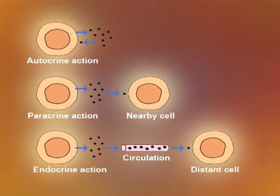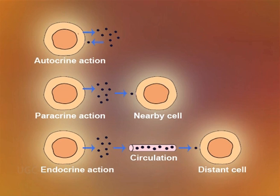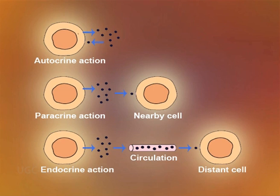A particular cytokine may bind to receptors on the membrane of the same cell that secreted it, exerting autocrine action. It may bind to receptors on a target cell in close proximity to the producer cell, exerting paracrine action. In a few cases, it may bind to target cells in distant parts of the body, exerting endocrine action. Cytokines regulate the intensity and duration of the immune response by stimulating or inhibiting the activation, proliferation, and/or differentiation of various cells, and by regulating the secretion of antibodies or other cytokines.